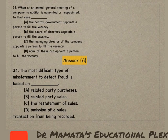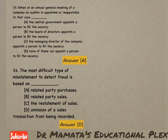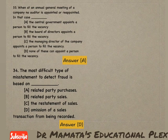Next: The most difficult type of misstatement to detect fraud is based on — related party purchase, related party sales, restatement of sales, or omission of a sales transaction from being recorded? If there is an omission of a sales transaction from being recorded, it will be very difficult to detect it. So option D is the correct answer.